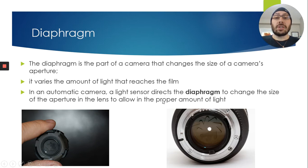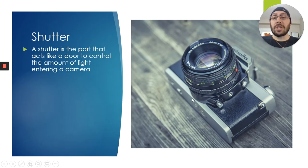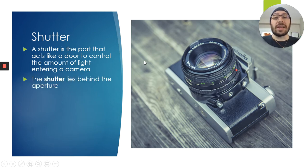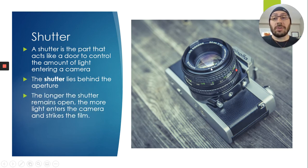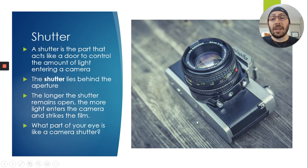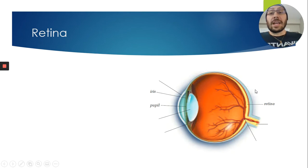The shutter is the camera part that controls the amount of light entering — it lies behind the aperture, and the longer it remains open, the more light enters. The equivalent part in your eye? Your eyelids.